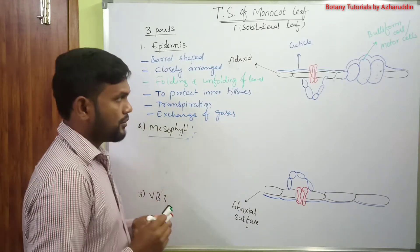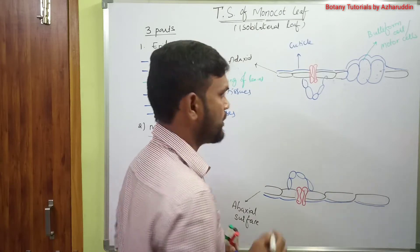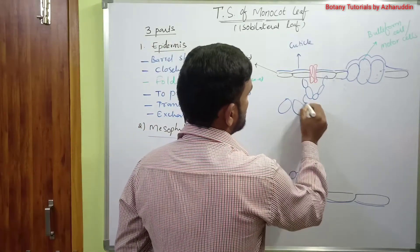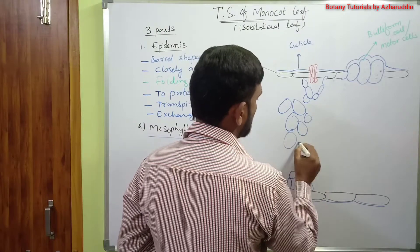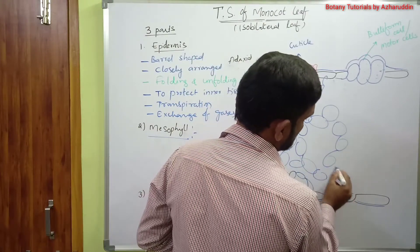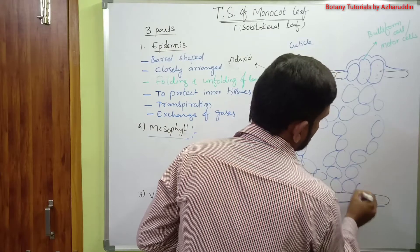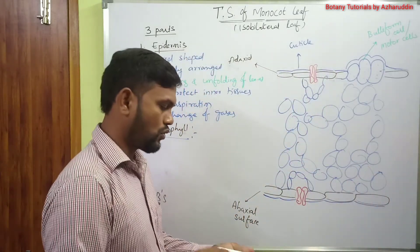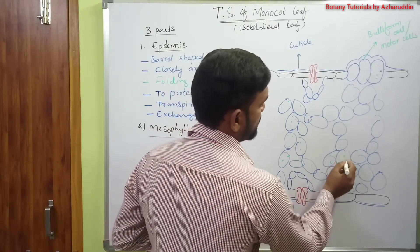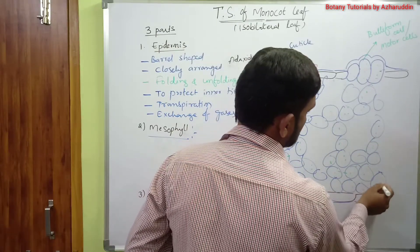Coming to mesophyll: the ground tissue that extends between the upper and lower epidermis is called mesophyll tissue. It is made up of either spongy parenchyma or palisade parenchyma, and cells are loosely arranged with intercellular spaces. These cells contain chloroplasts and are concerned with photosynthesis — it is the main photosynthetic area which synthesizes food materials.